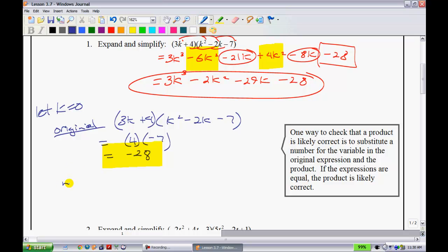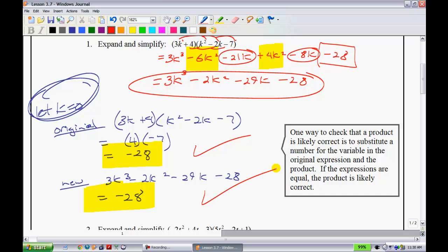Now I'll do the new equation. So maybe I'll just write new down here. So I have 3k cubed minus 2k squared minus 29k minus 28. Now I think you can probably see that you're going to have 0 minus 0 minus 0, because if we're letting k equal 0 like we have up here, then you just simply get negative 28. And so since both of those equations are the same, we have a pretty good idea that we have the right answer. So that's just one way that you guys can go ahead and check.